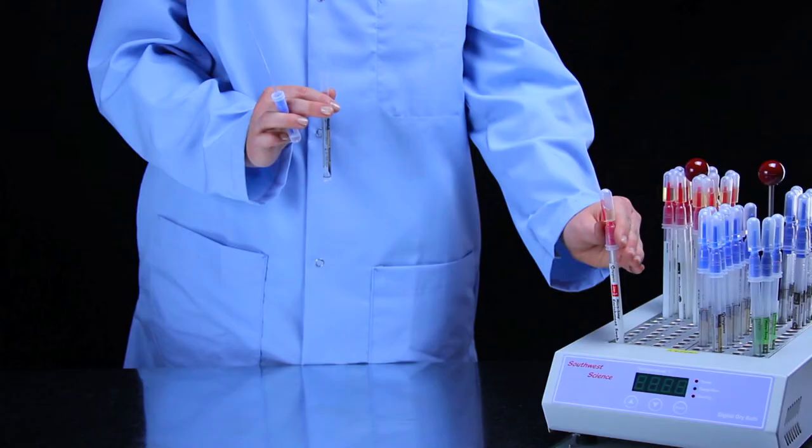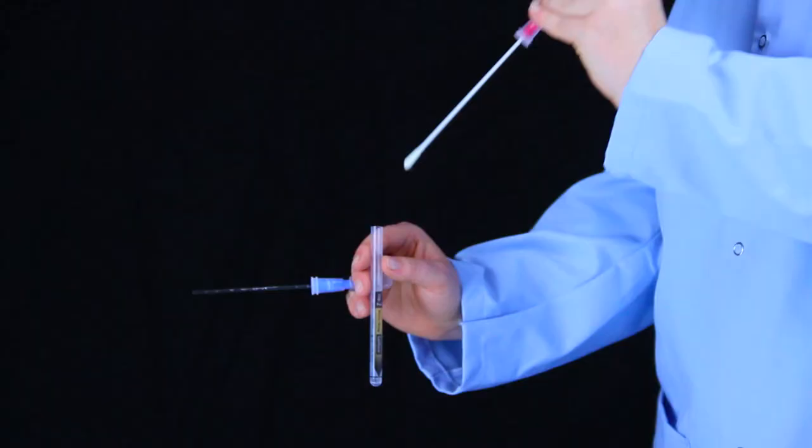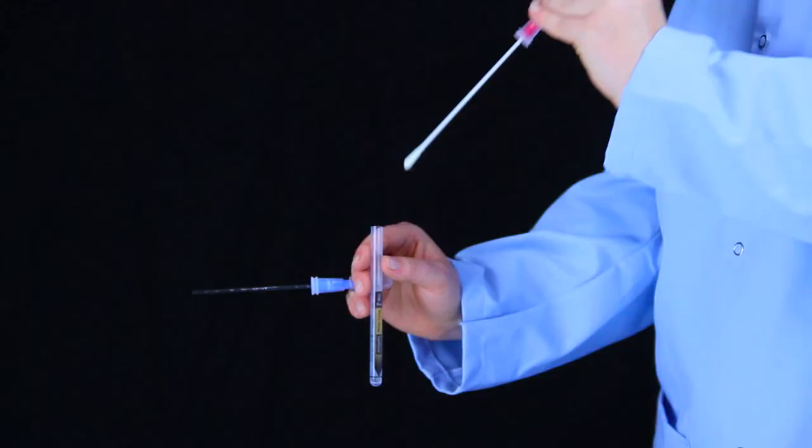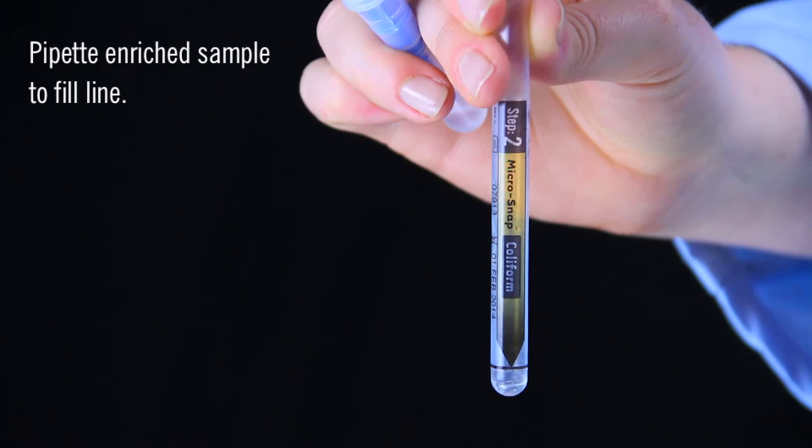Separate the enrichment swab from the tube and transfer the enriched sample to the detection device. The detection device has a fill line marked on the bottom of the tube. Fill to this line or about 0.1 milliliter. The remaining enrichment sample can be returned to the incubator for additional testing.